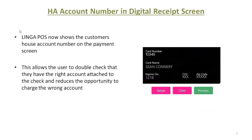House account number in digital receipt. Linga now offers the option to have the house account number show on the digital receipt when house account payment is chosen. If you selected a customer inside the check when you went to the payment screen and selected house account, you would see their account number and name. This allows the user to double check and have the right account attached, reducing the opportunity to charge the wrong account.